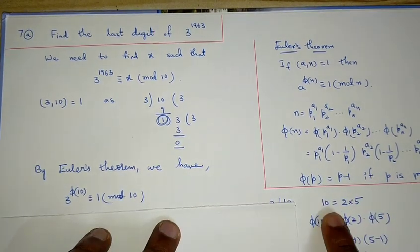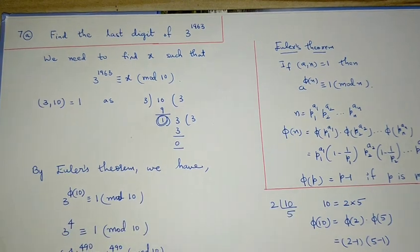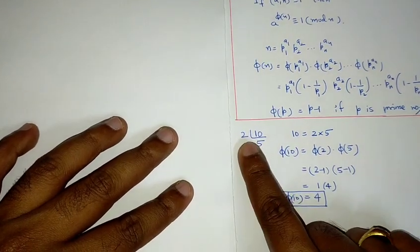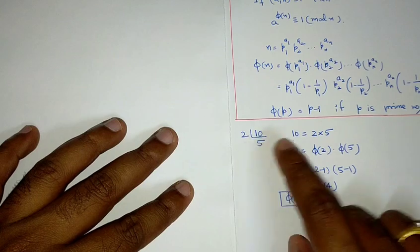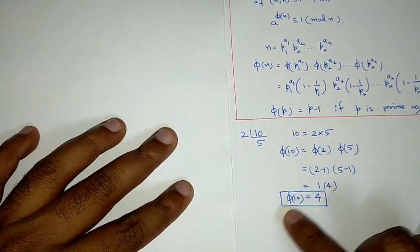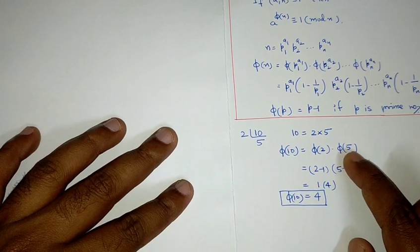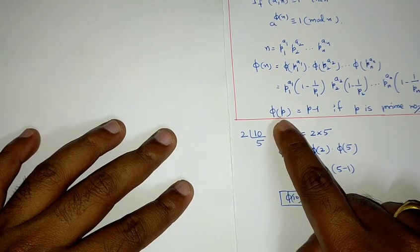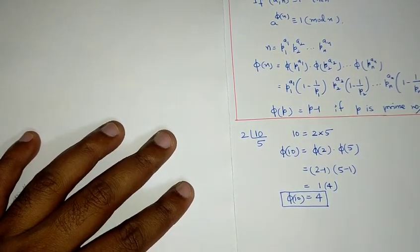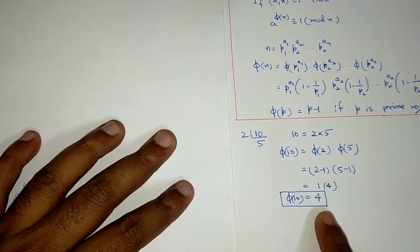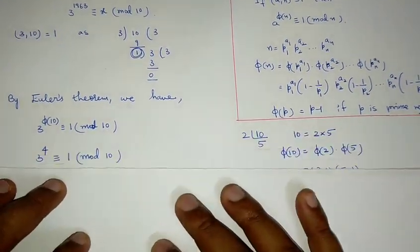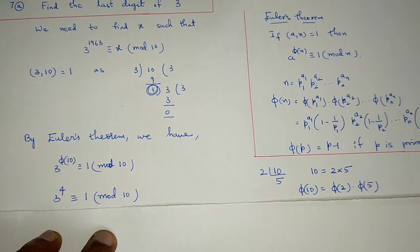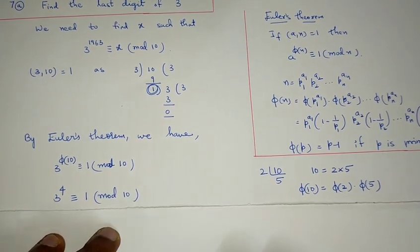We write 10 in canonical form: 10 = 2^1 · 5^1. Then φ(10) = φ(2) · φ(5). Since 2 and 5 are prime, φ(2) = 1 and φ(5) = 4, because φ(p) = p − 1 for any prime p. Therefore φ(10) = 1 · 4 = 4. Substituting, we get 3^4 ≡ 1 (mod 10).